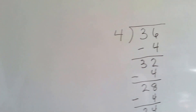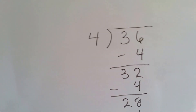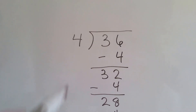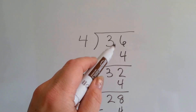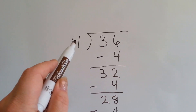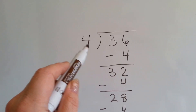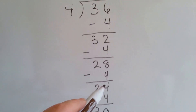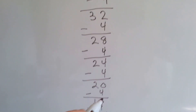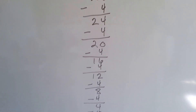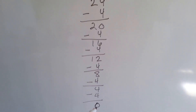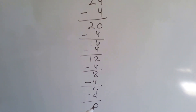If we had 4 trying to fit into 36 — 36 divided by 4 — we keep taking away 4's, we keep subtracting them until we get to 0.